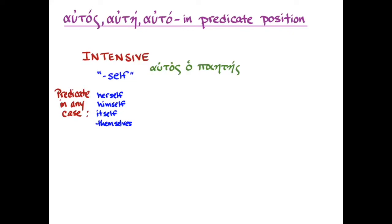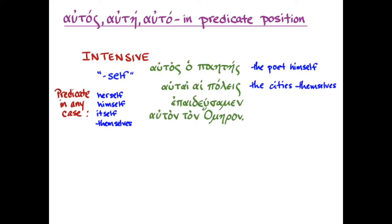So let me give you a few examples with this. Autos ha-poietes, the poet himself. Not the same poet, which is ha-autos-poietes, but the poet himself. When the form of autos is in predicate position, modifying something in the sentence, it means that thing itself. So we can also have autai-ha-poietes, which is going to mean the cities themselves. Or perhaps, epideus amen auton ton homeron. That would mean we educated Homer himself. Really, really, it was Homer himself. I kind of feel like a fangirl when I use that form.